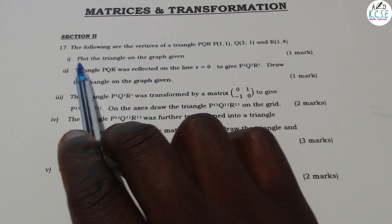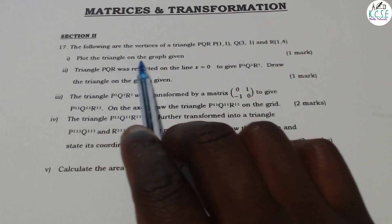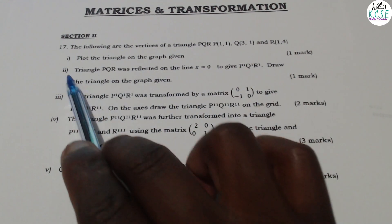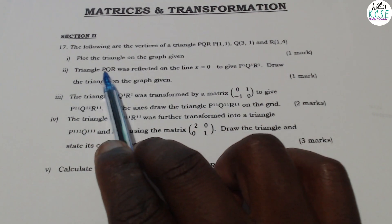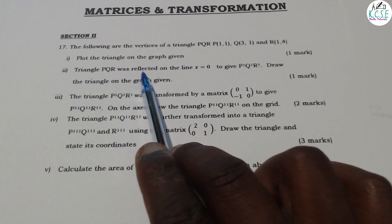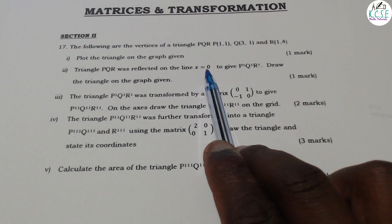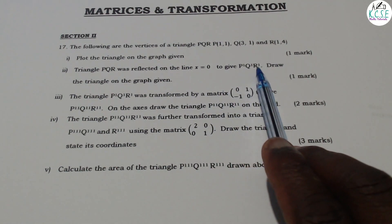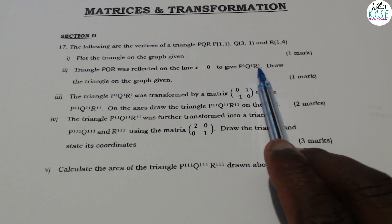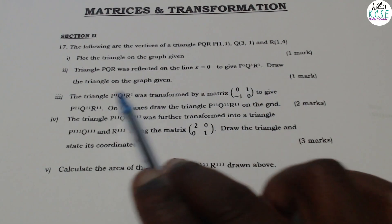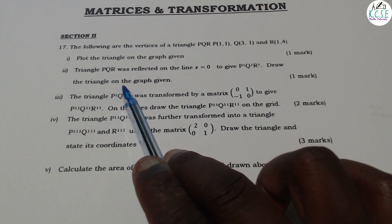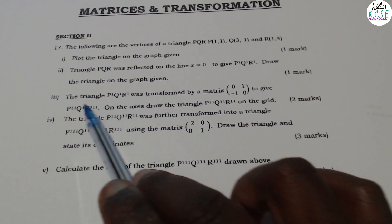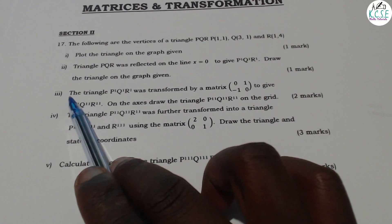Part 1: Plot the triangle on the graph given on the grid. Part 2: Triangle PQR was reflected on the line x equals 0 to give P1, Q1, R1. Draw the triangle on the graph given.